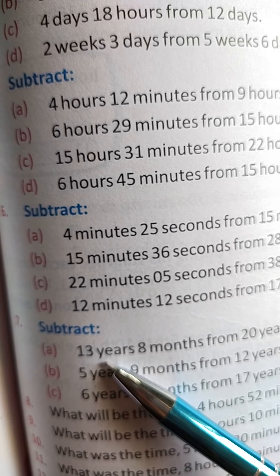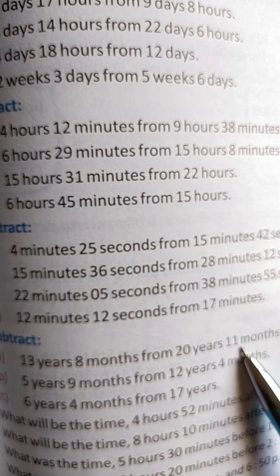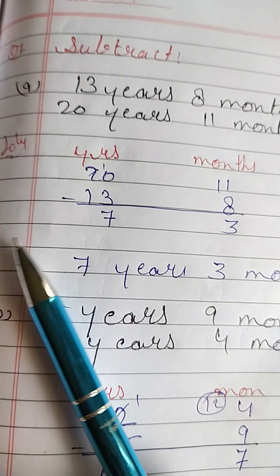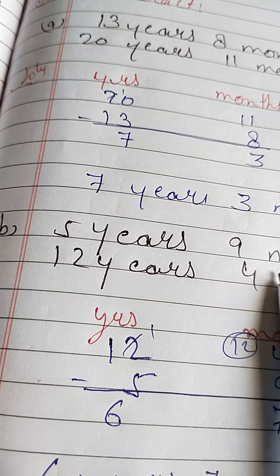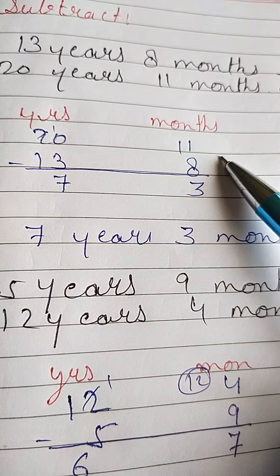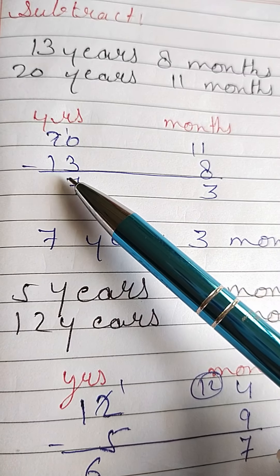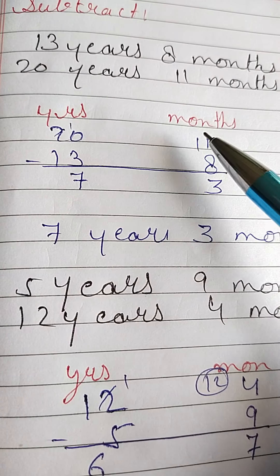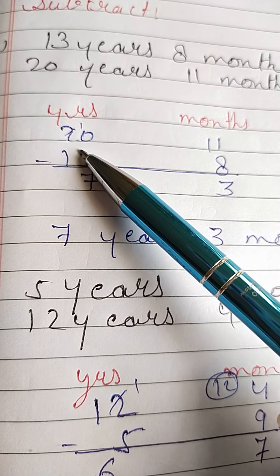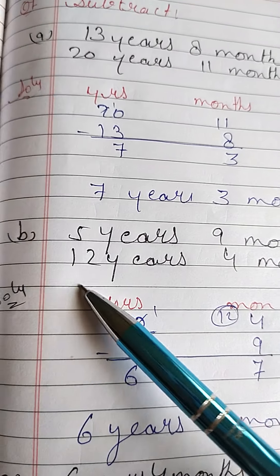Now come to question number 7. Subtract 13 years 8 months from 20 years 11 months. Write years and months columns: 20 years 11 months on top, 13 years 8 months below. 11 minus 8 gives 3, and 20 minus 13 gives 7. So your answer is 7 years and 3 months.